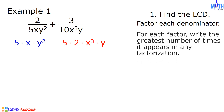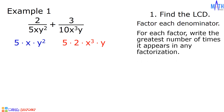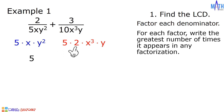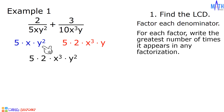For each factor, let us write the greatest number of times it appears in any factorization. Since 5 appears once in both factorizations, the greatest number of times 5 appears is once. While 2 appears once, and the greatest number of times 2 appears is also once. The greatest number of times x appears is three, and the greatest number of times y appears is twice. Since 5 times 2 is equal to 10, then we have 10x cubed y squared as the LCD.